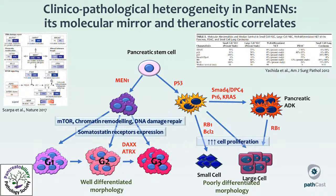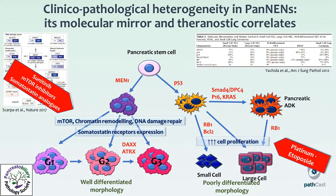Intermediate and high-grade well-differentiated pan-NEMs may also show mutations in DAXX and ATRX genes. Poorly differentiated neuroendocrine neoplasms in the pancreas are thought to be driven by mutations in TP53, shared possibly with pancreatic adenocarcinoma pathogenesis. Additional mutations in RB1 and BCL2 genes, which increase cell proliferation, are key alterations in poorly differentiated pan-NEMs. These different pathogenesis pathways are useful for decision-making: sunitinib, mTOR inhibitors, and somatostatin analogues are active against well-differentiated pan-NEMs, whereas platinum-based chemotherapy is active against poorly differentiated pan-NEMs.